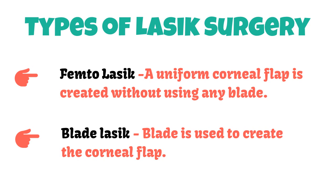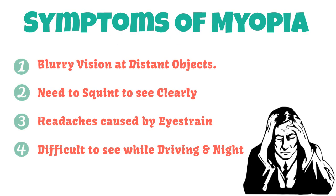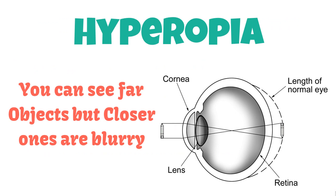In myopia, a patient can see objects near to them clearly, but objects further away are blurry. The symptoms of myopia include blurry vision for distant objects, the need to squint to see clearly, headaches caused by eye strain, and difficulty seeing while driving at night.